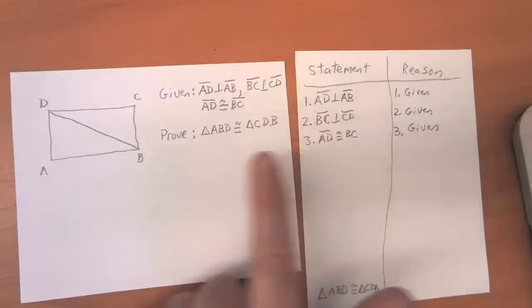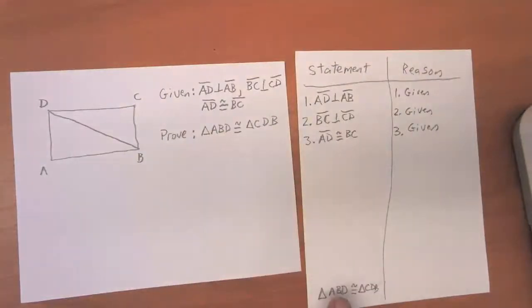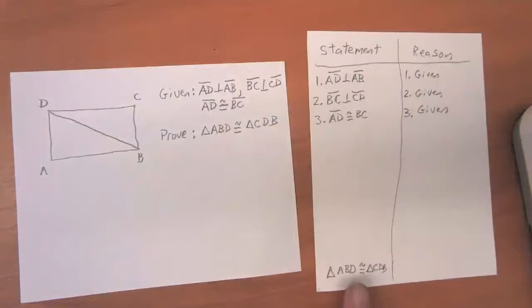You can see I've already listed those three givens on the proof, and we need to prove these two triangles are congruent. You notice I put that down at the bottom of my proof, so now I only have to fill in the middle of the proof.